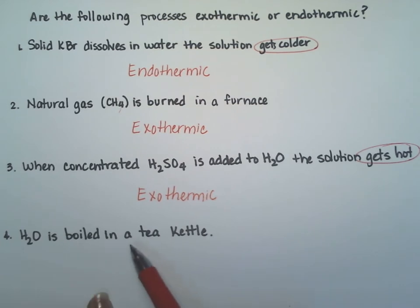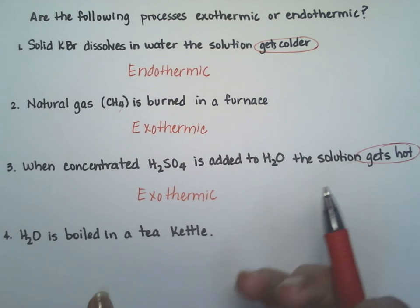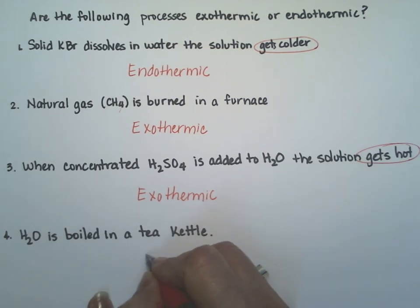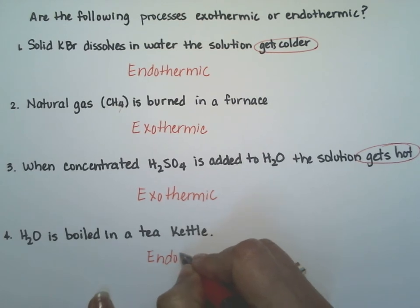The last one, water is boiled in a tea kettle. Well heat must be added in order for the water to boil. So whenever we're heating up water, the water is absorbing all the heat to get hot. And that is an endothermic reaction.